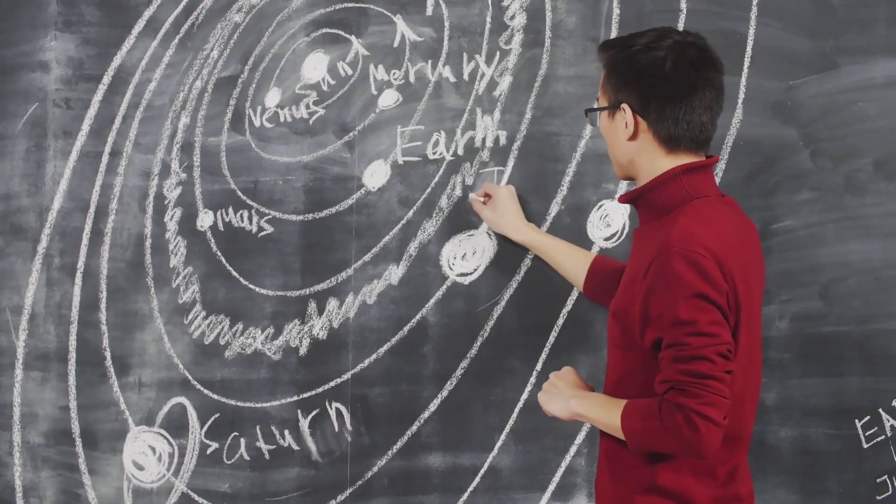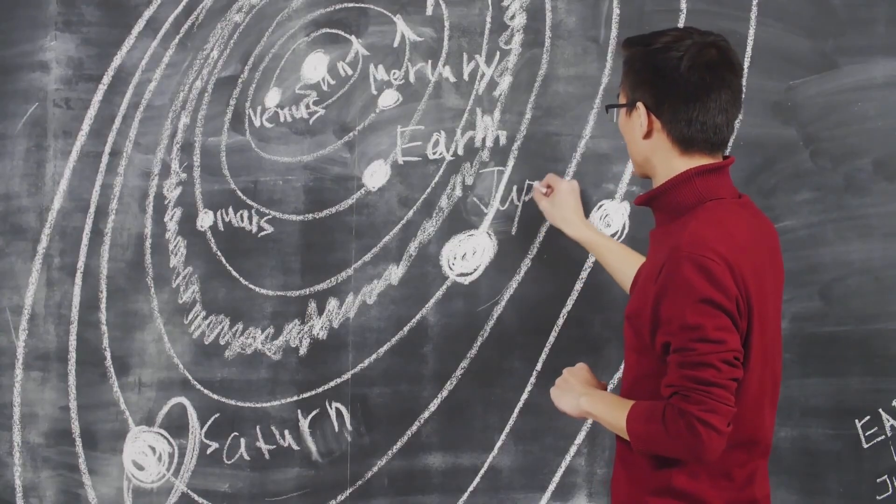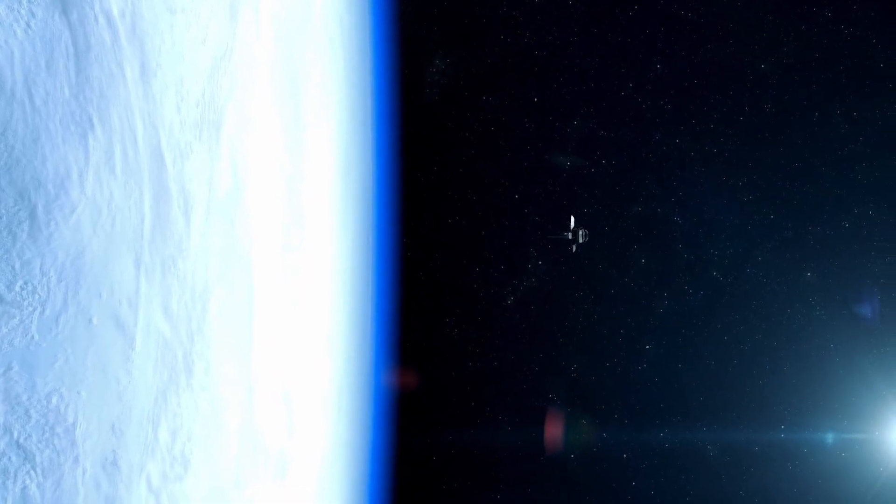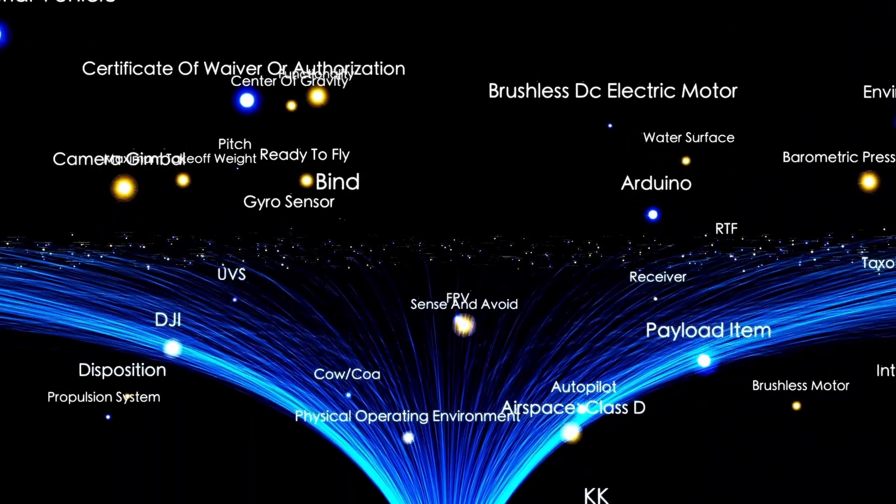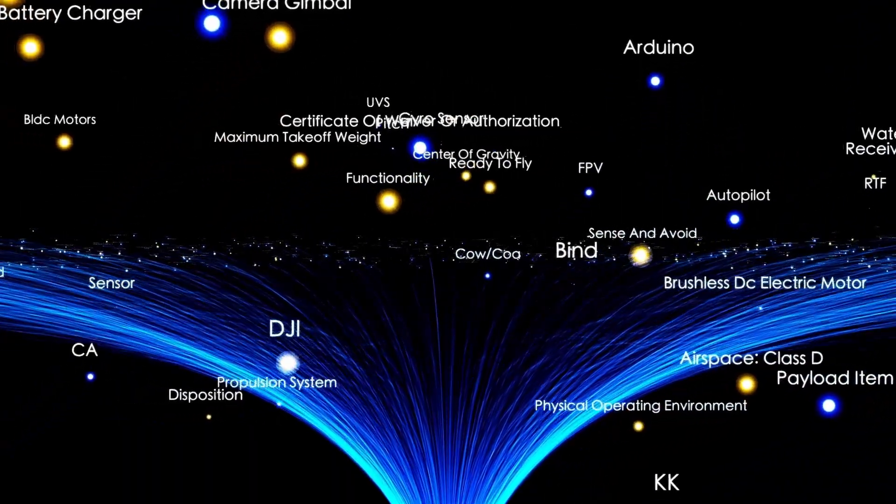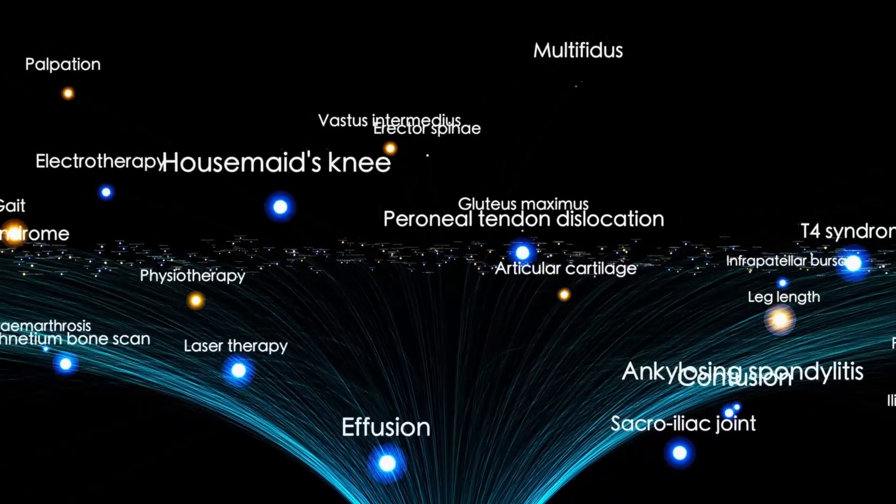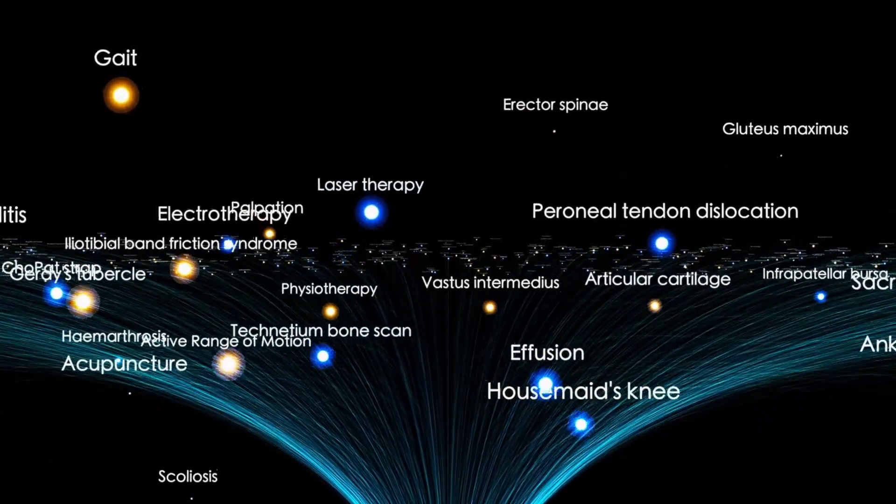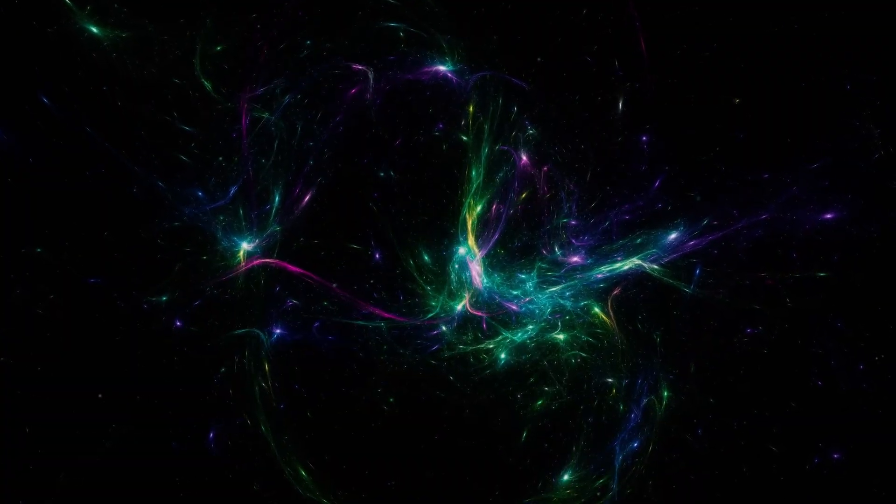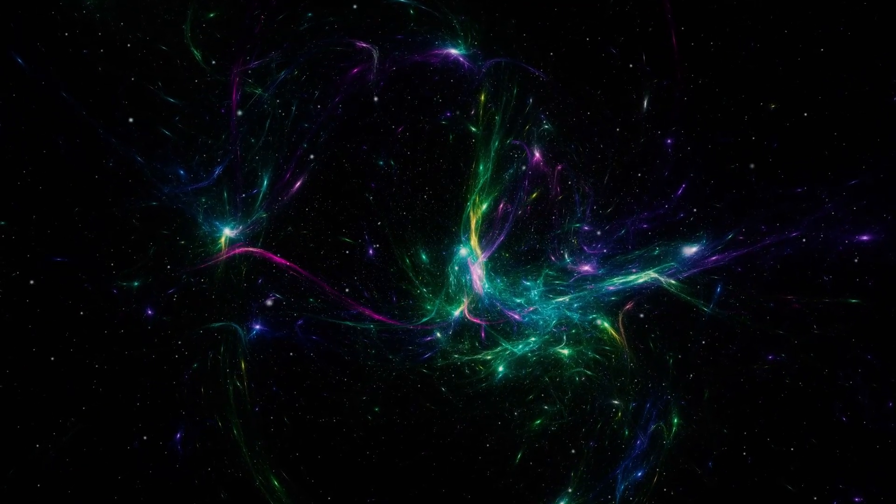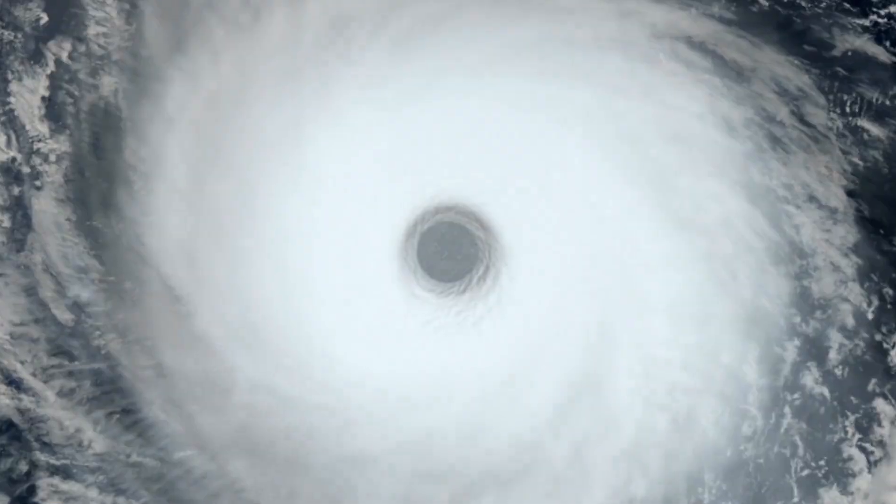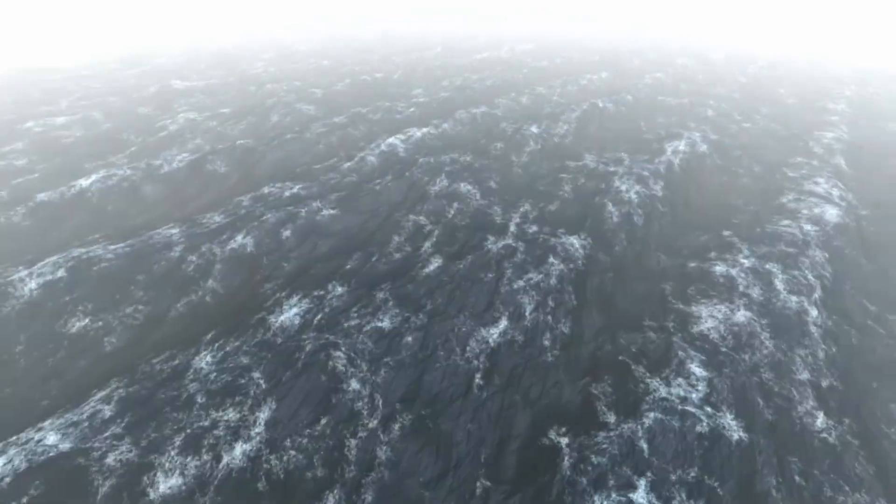The edge of the solar system isn't marked by a place, but by a threshold, an invisible curtain across space where the sun's influence begins to wane and the domain of interstellar space takes hold. Voyager 1 crossed this line in 2012, officially becoming the first man-made object to leave the bubble of the solar wind and enter true interstellar territory. But what lay beyond didn't behave as expected. Then came the low-frequency plasma waves, energy pulses Voyager began detecting like echoes ricocheting off unseen surfaces. Intrigued but not alarmed, scientists logged the data, that is, until now.